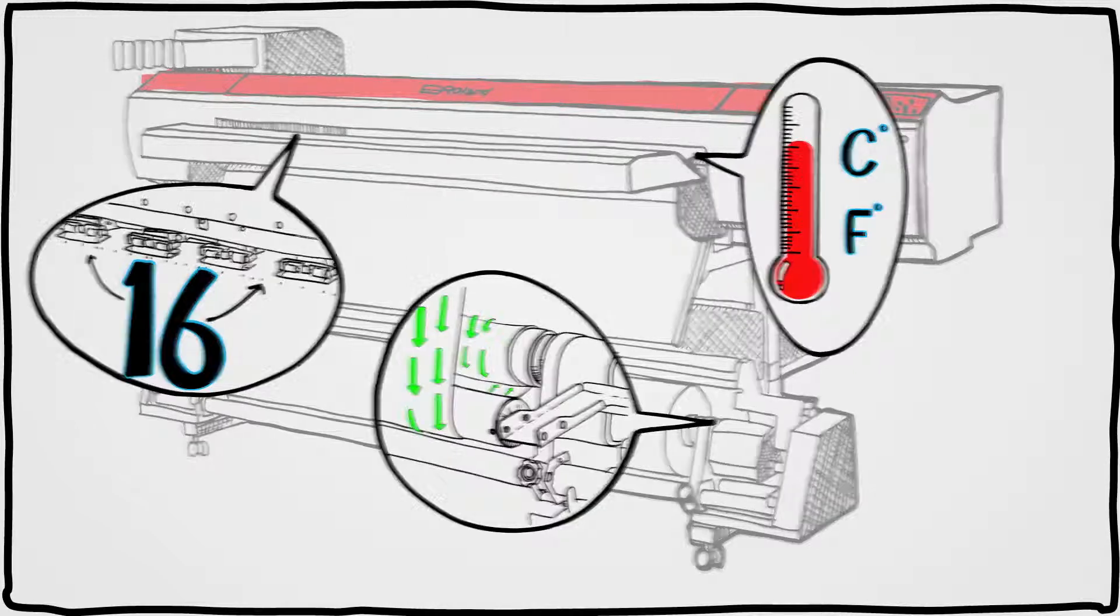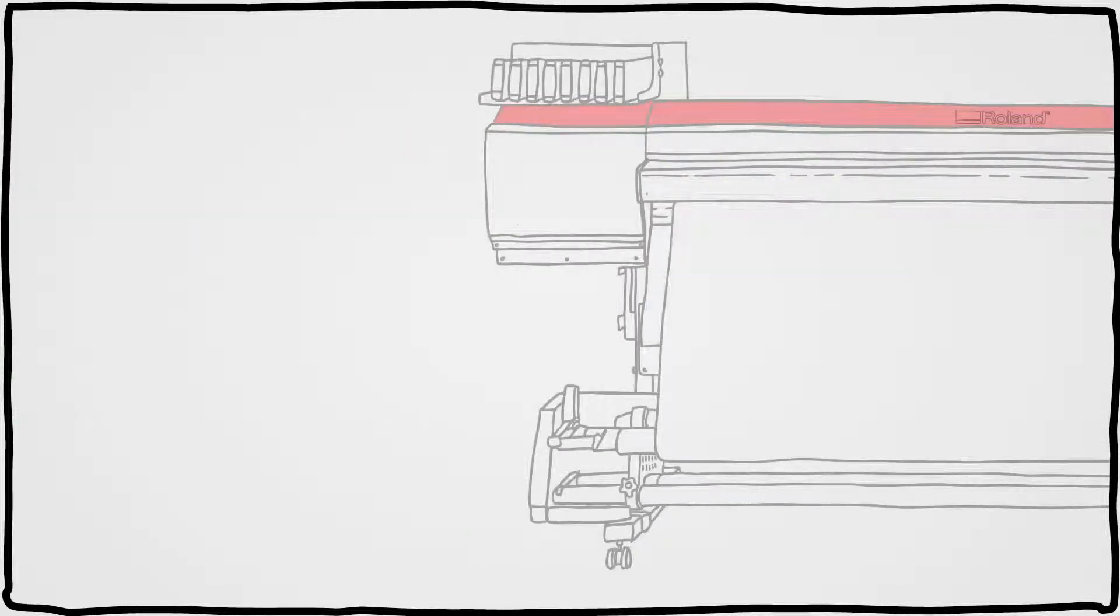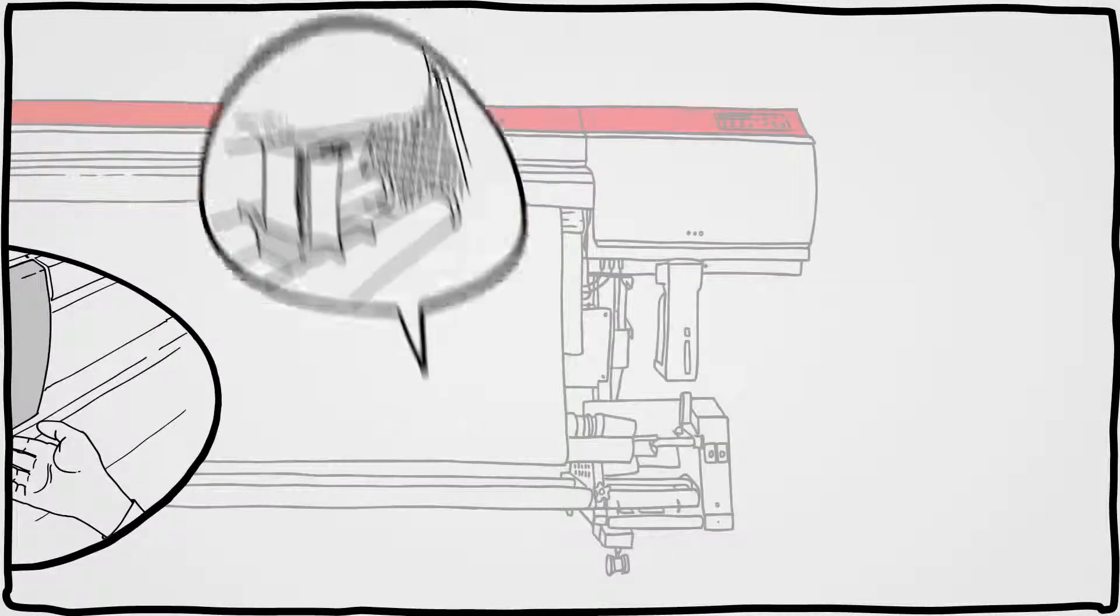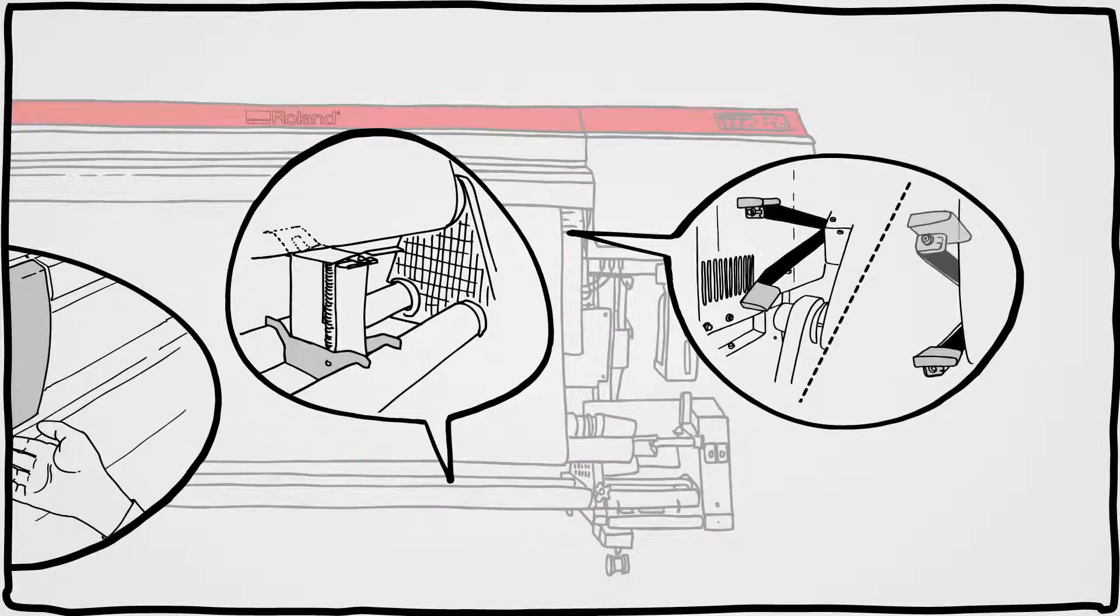When it comes to ease of use, the XF was built for productivity. Front-loading cartridges, a one-touch open and closed cover for easy cleaning, levers in front and in back to load your media. And if the media is heavy, media brackets make it easier to lift.